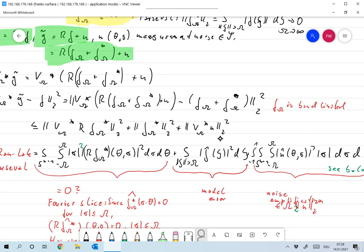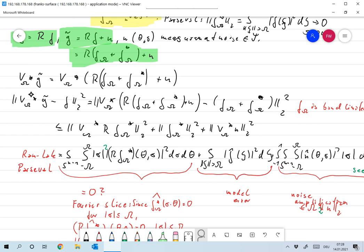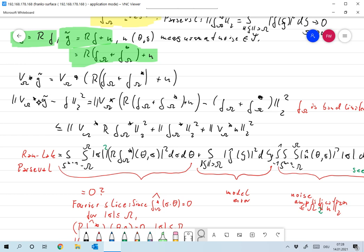Our approximation v_omega convolution with g tilde is always omega band limited, so we will never be able to reach any frequencies in f that go beyond omega because this is omega band limited and f is not necessarily omega band limited.